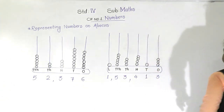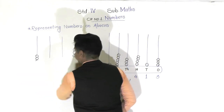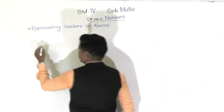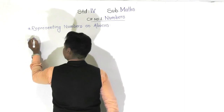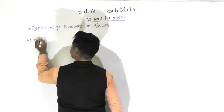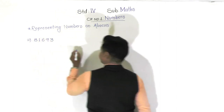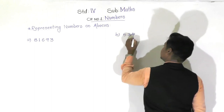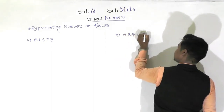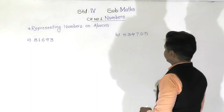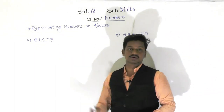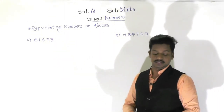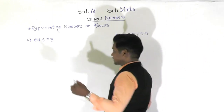Also, when any number is given, the question can be asked the other way: they will give numbers like 1,53,373, or 81,693, or another number 5,13,47,05. The question is to represent these numbers on the abacus. For this, we need to draw a picture of the abacus.